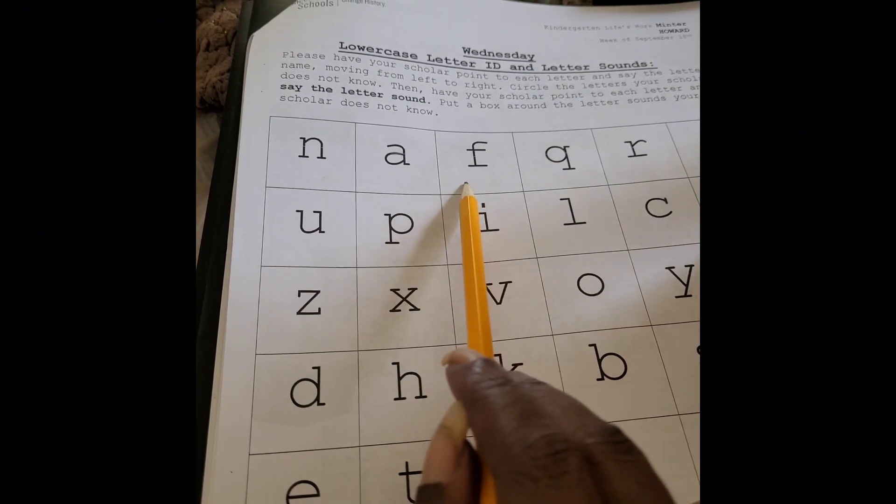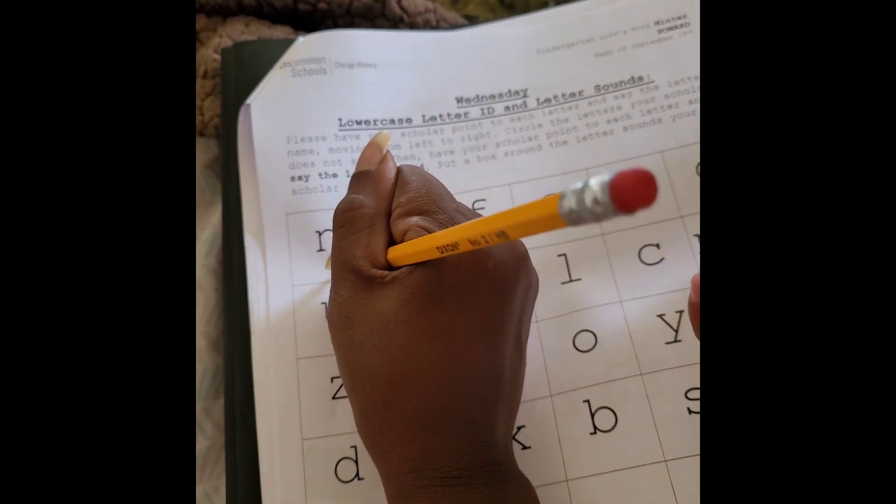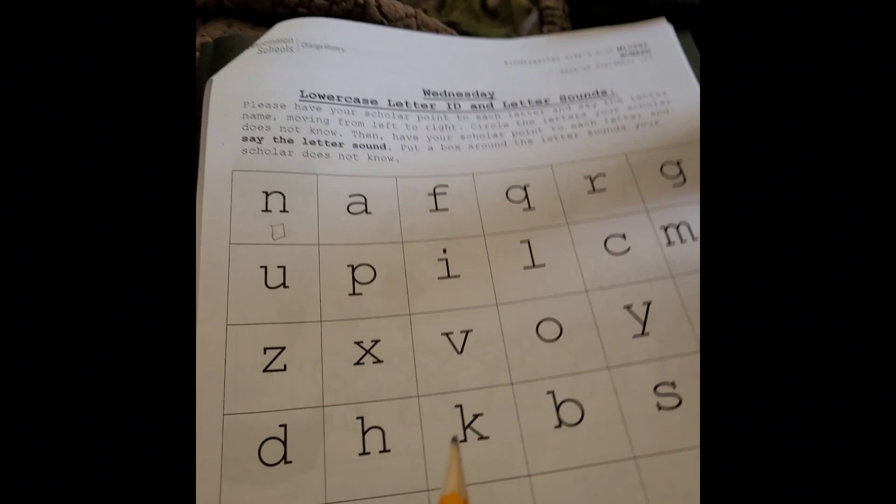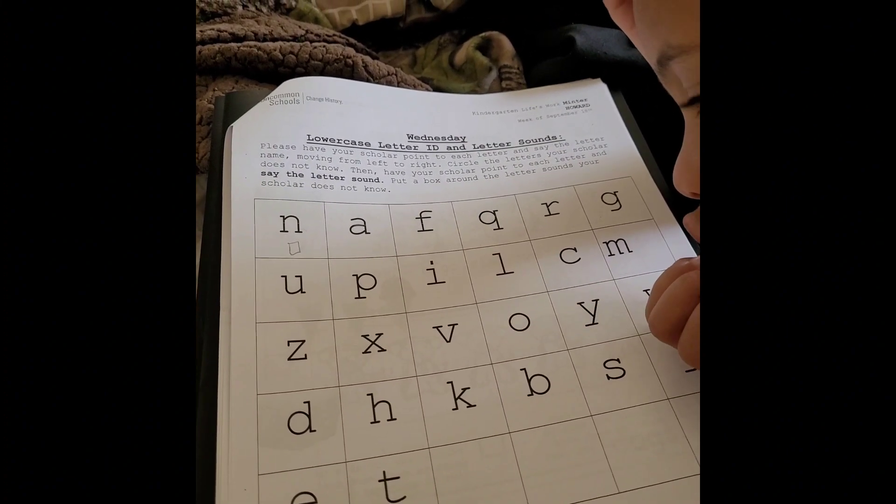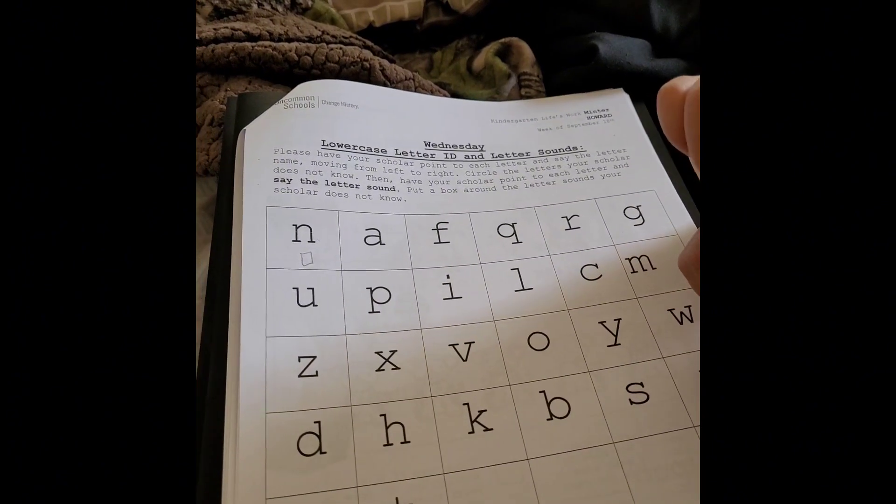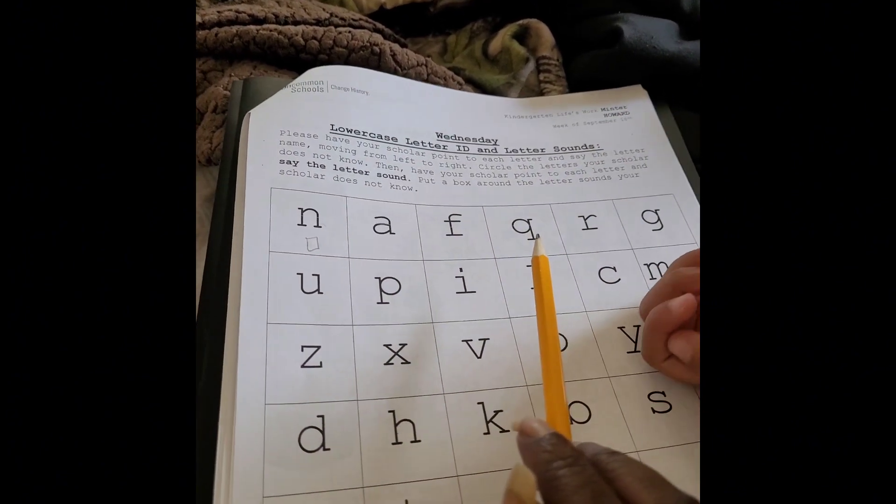Alright, what letter is this? F. Okay, give me something that starts with the letter F. Maybe something like... something that we eat. What do we eat? Food. Alright, food starts with the letter F. What about this one?